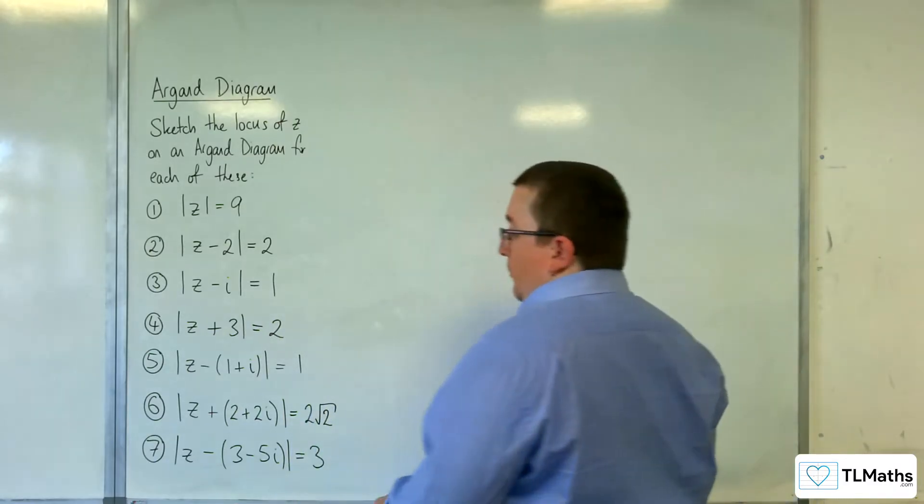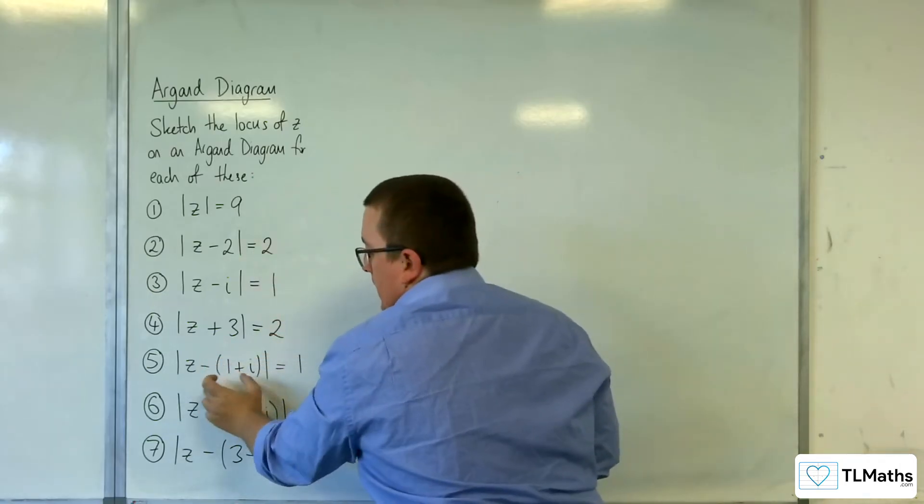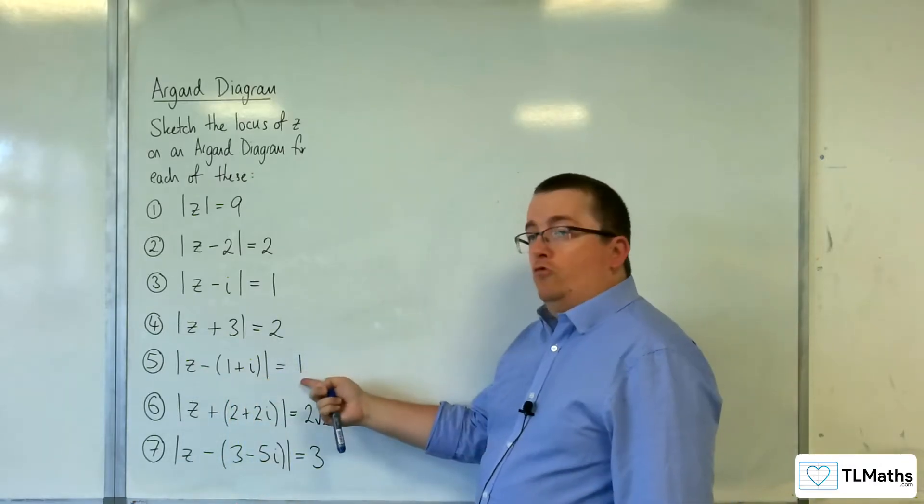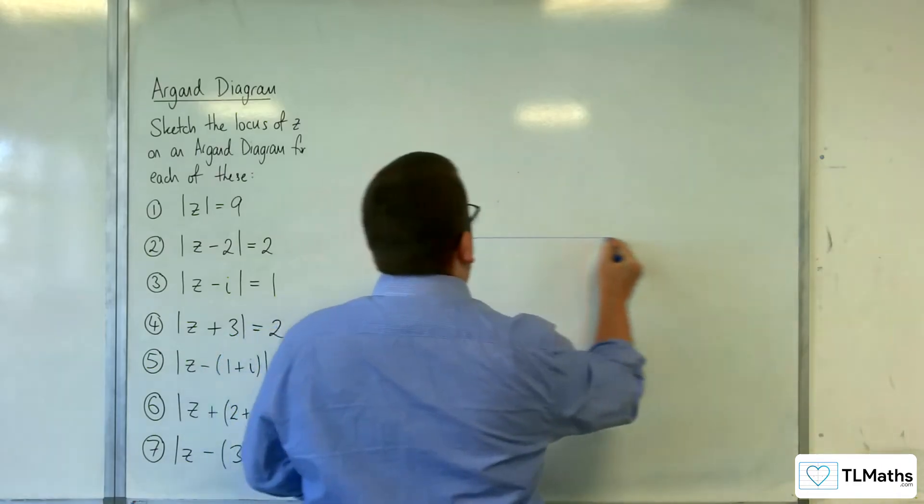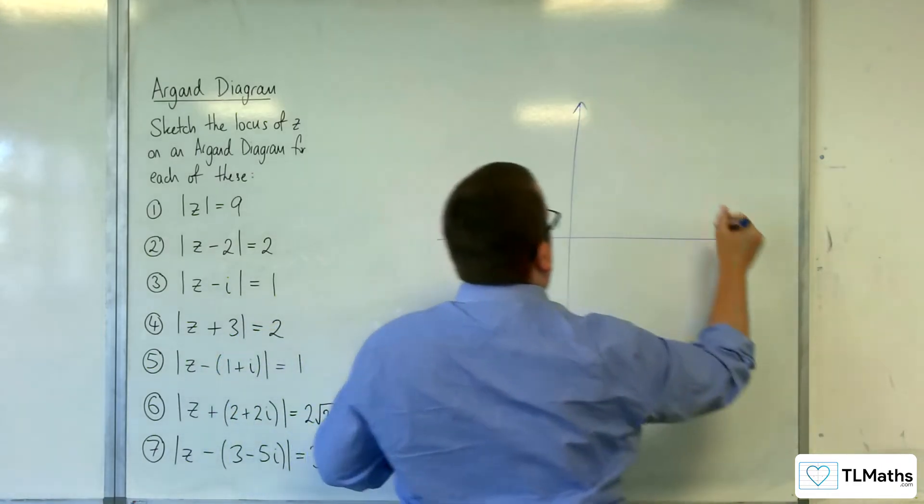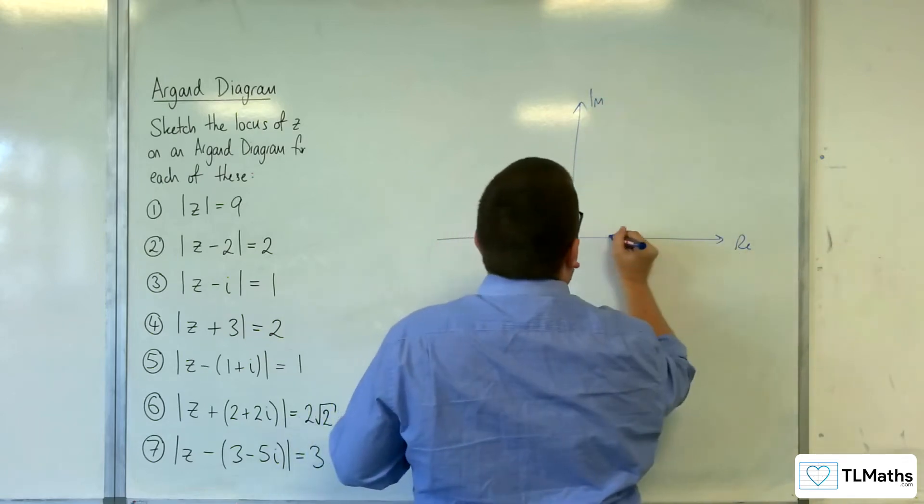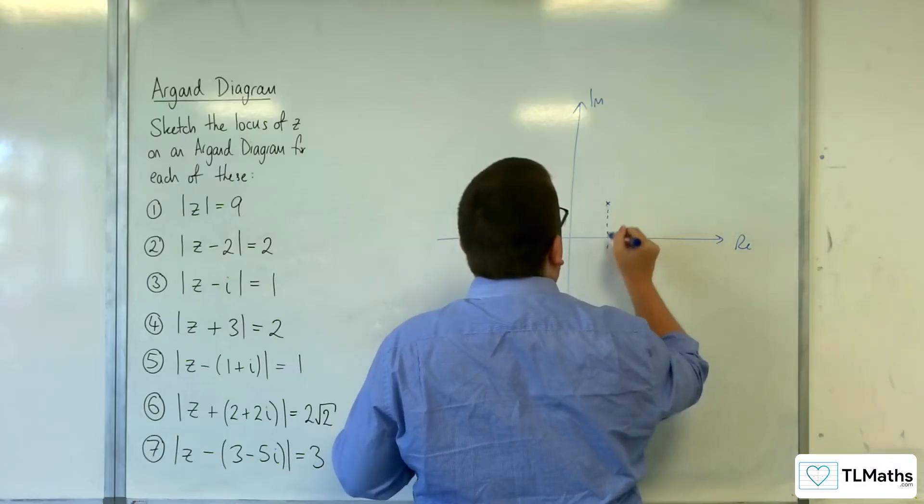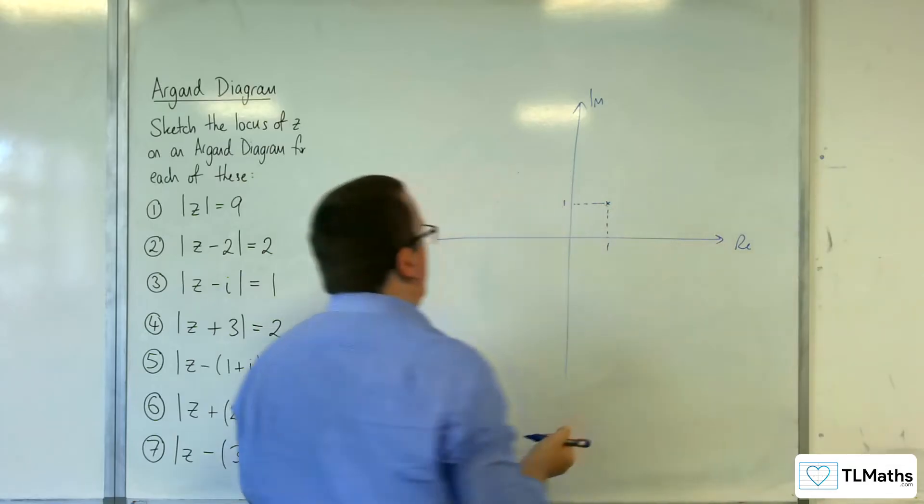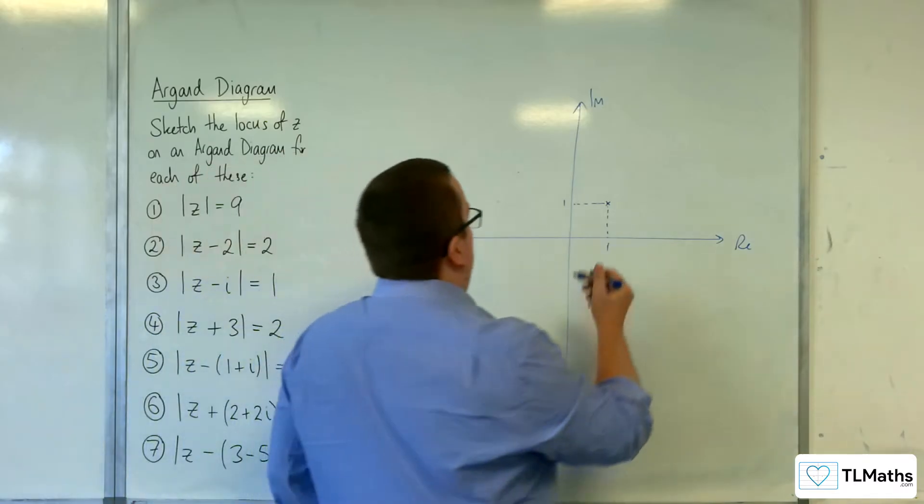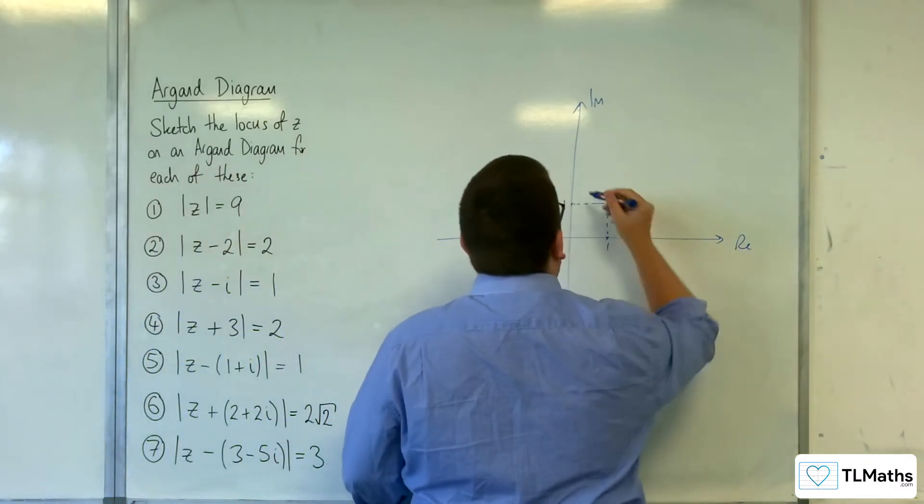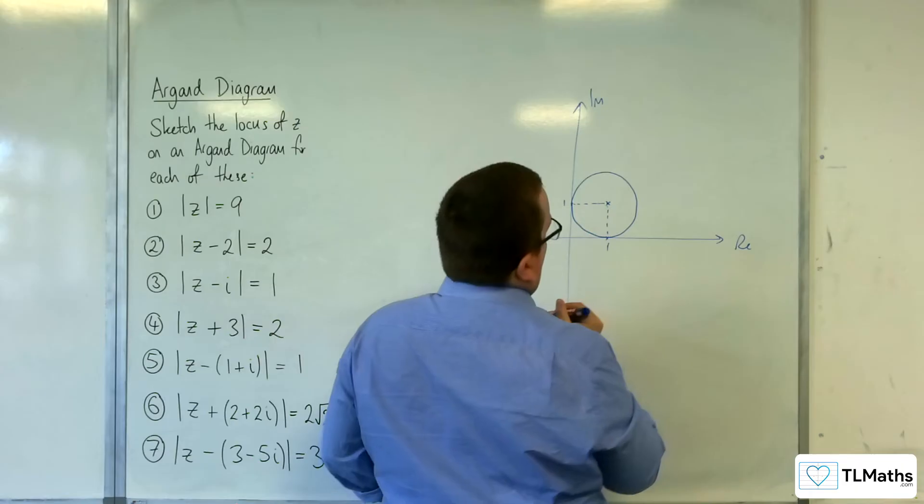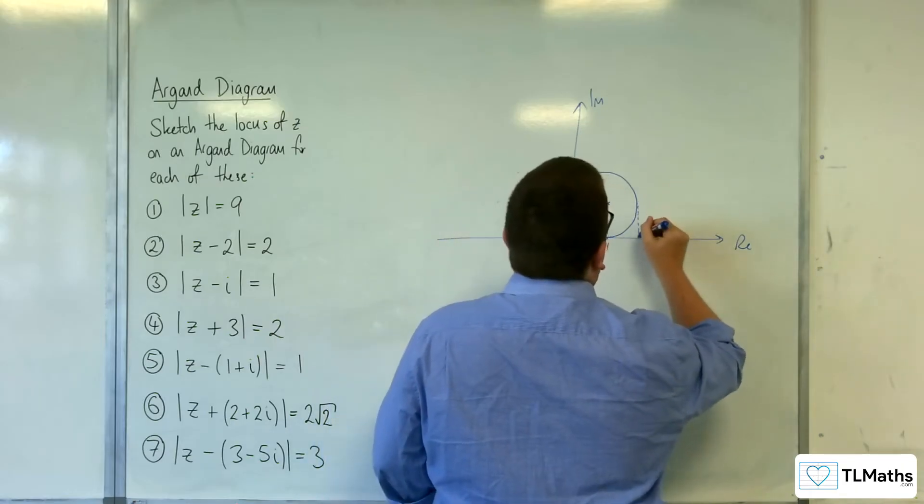Number 5. z take away with 1 plus i in a bracket. So all of that is being taken away. So that means it's centred at 1 plus i on the Argand diagram. It's got a radius of 1. So 1 plus i, something like this. So there is its centre. It's got a radius of 1, so it's actually going to be going through both those points.